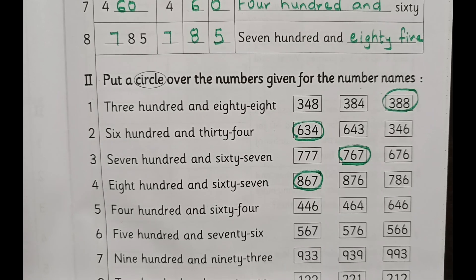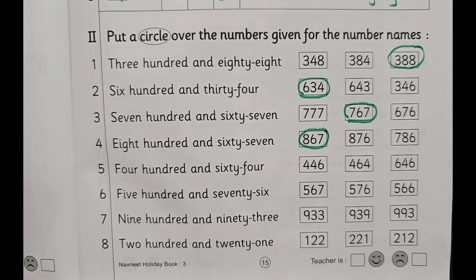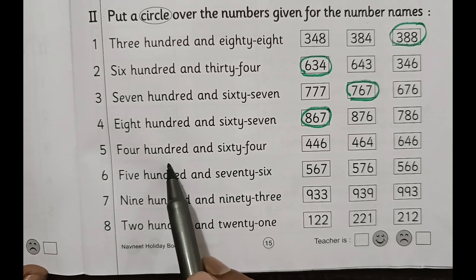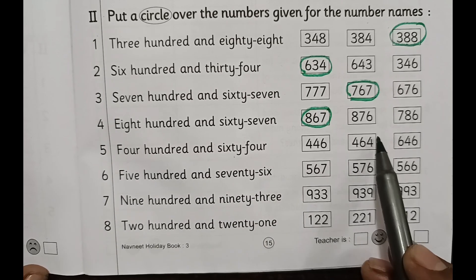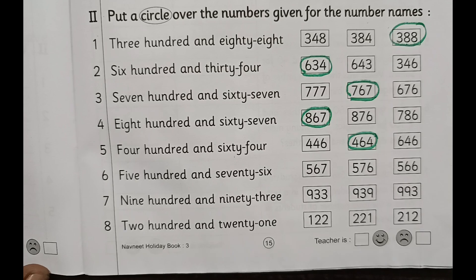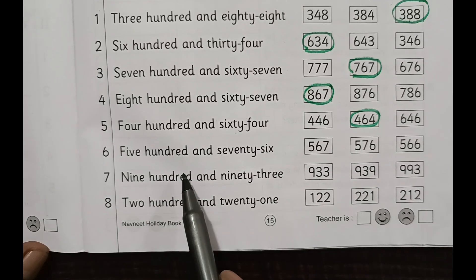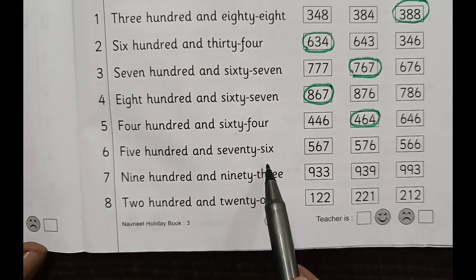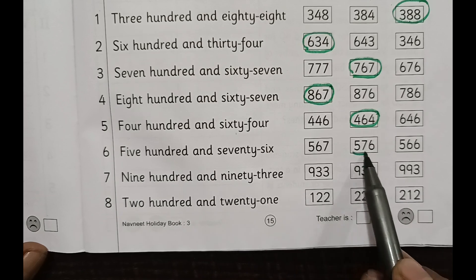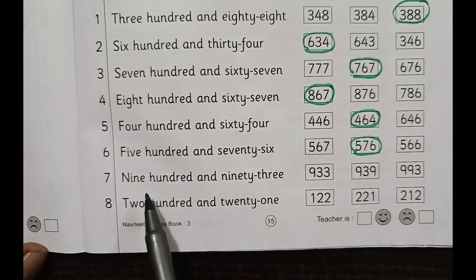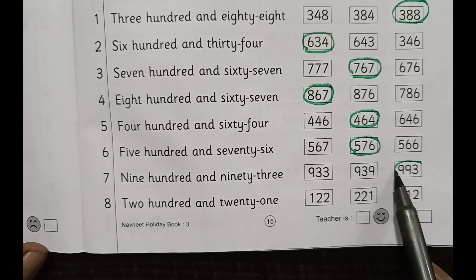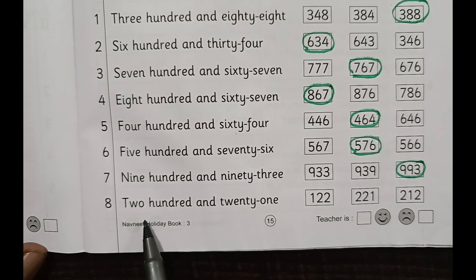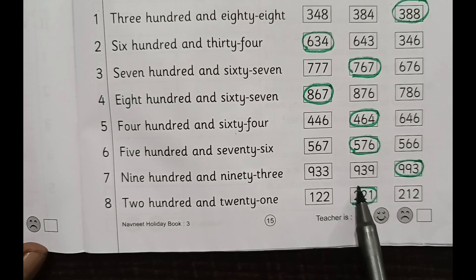So if you read two times, you will come to know very nicely. Then 464, 476, 993, 993, 227, 211, 221.